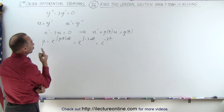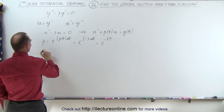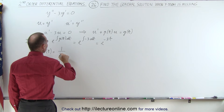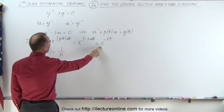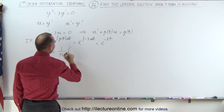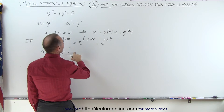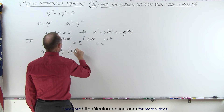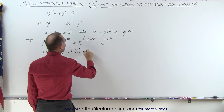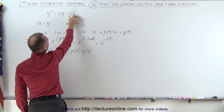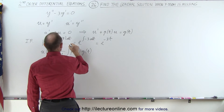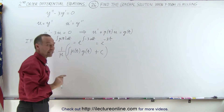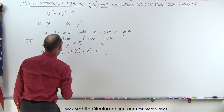To find the general solution, u as a function of t is equal to one over the integrating factor, times the integral of the integrating factor mu of t times g of t dt, plus a constant of integration. In this case g of t is zero, so let's plug that in and see what we get.